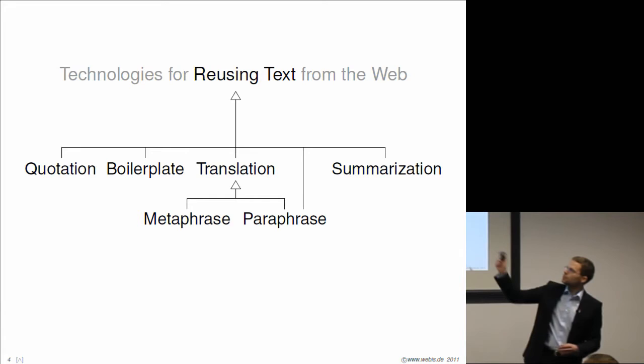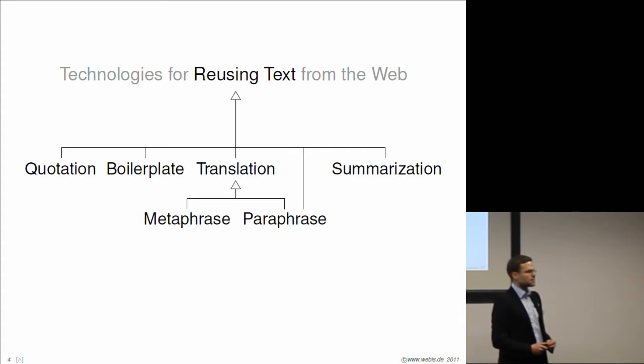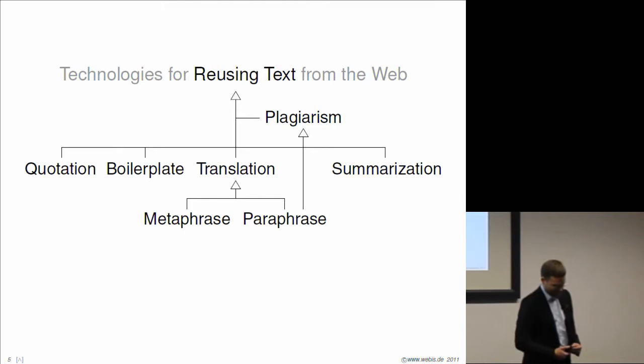There's one famous item missing from this list. You may already guess it. It's very famous in Germany, as of recent, and it's called plagiarism. Plagiarism has a special role in this taxonomy. Plagiarism is a form of text reuse, but it turns out all other forms of text reuse I just introduced can be plagiarism under the right circumstances. This is why plagiarism is placed on top and has a connection to all the other forms of text reuse as well.